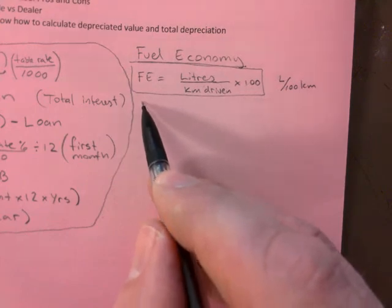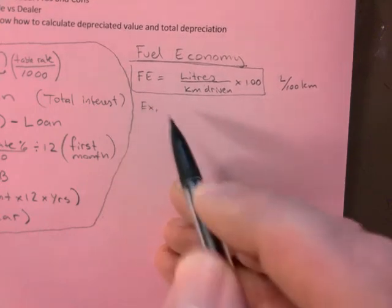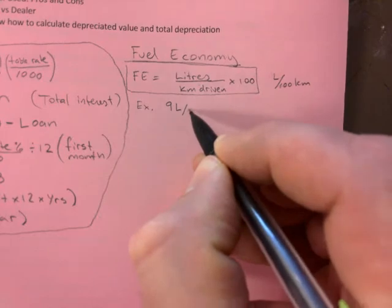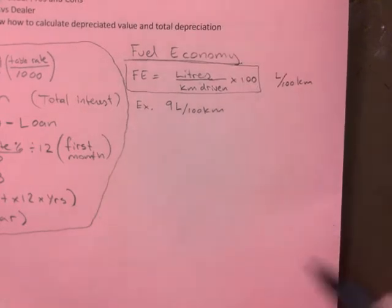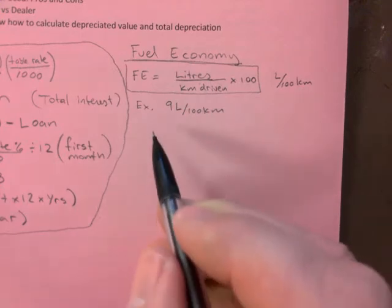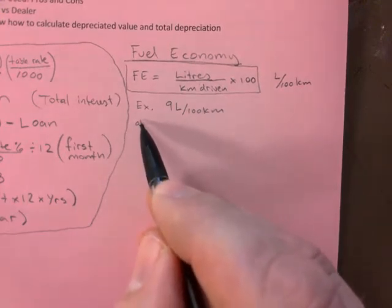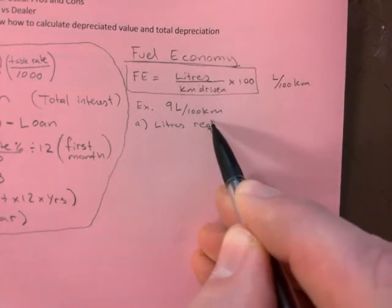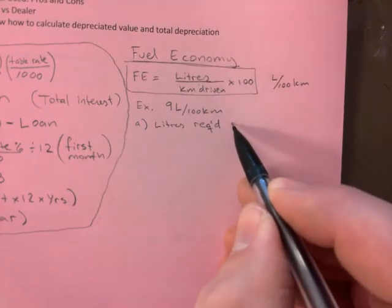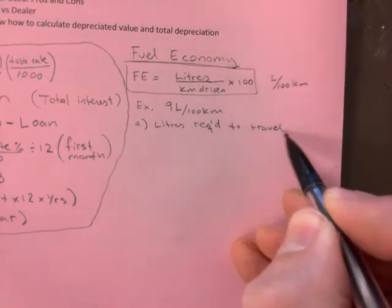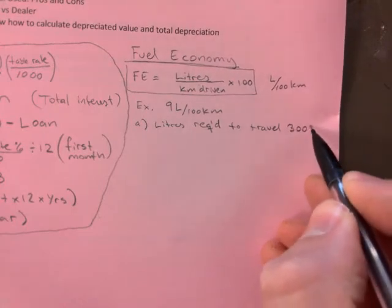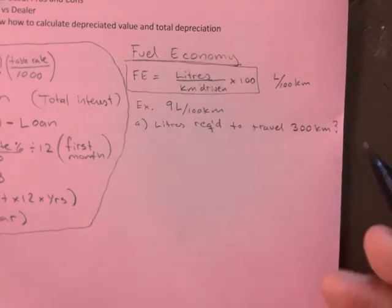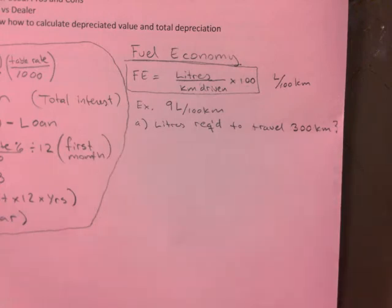So the fuel economy is liters that you use for that specific trip, kilometers driven times 100. And it will always be stated as liters per 100 kilometers. That's how you would add what you would add to the number, you calculate liters per 100 kilometers of travel. So I'm going to give you an example here. Let's say you have a car that uses nine liters per 100 kilometers. And that's obviously on average.